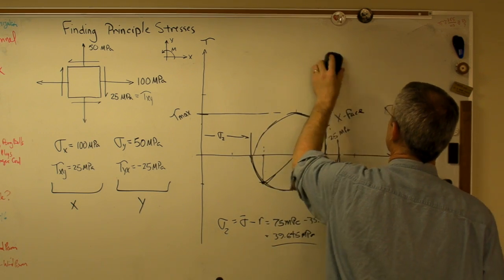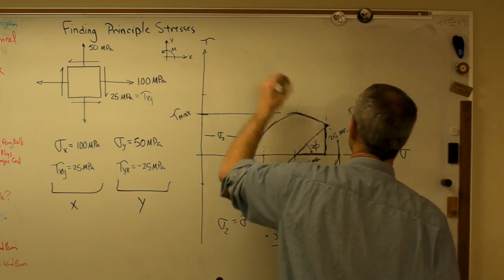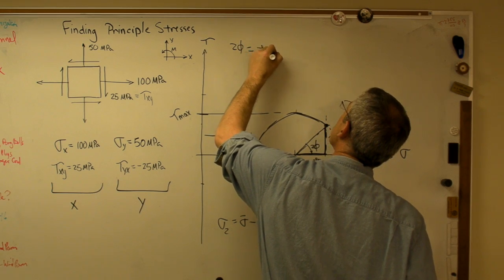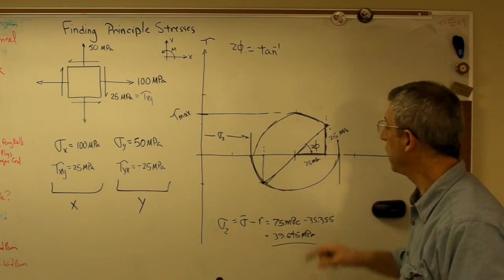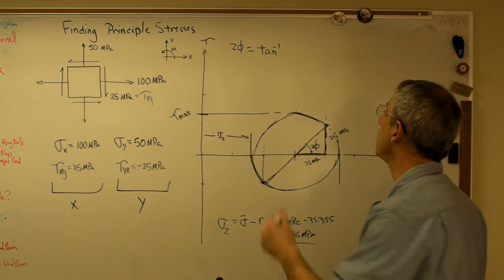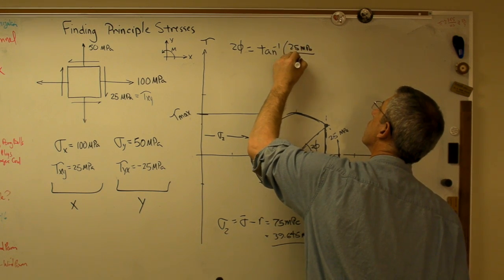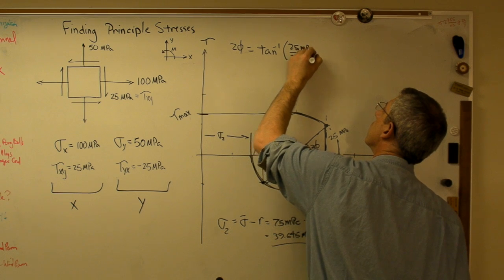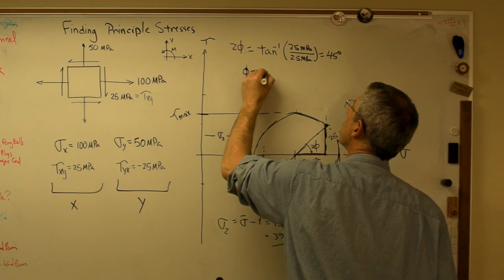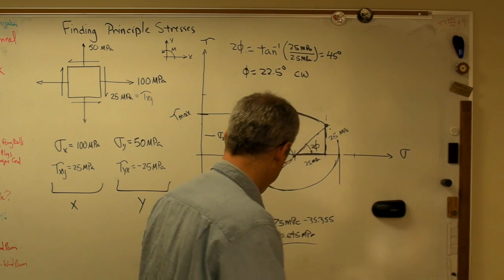I'm going to erase this here. So 2 phi has to be the inverse tangent of that distance divided by that distance. Well, in this one example, they're equal to each other, so that's easy. So that means that's 45 degrees. That means phi equals 22.5 degrees, and that's in the clockwise direction. That's important.